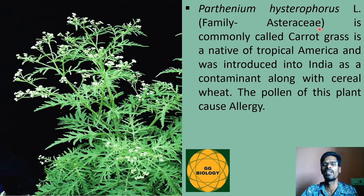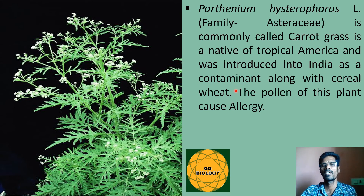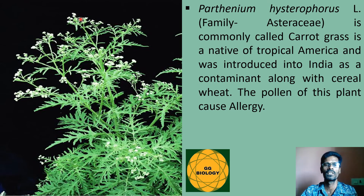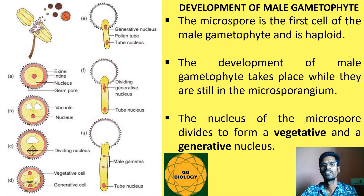Parthenium hysterophorus, belonging to the family Asteraceae and commonly called carrot grass, is native to the tropical American region. It was introduced to India as a contaminant along with imported cereal wheat. The pollen of this plant causes allergy in certain individuals.